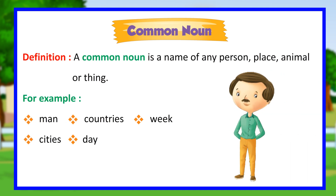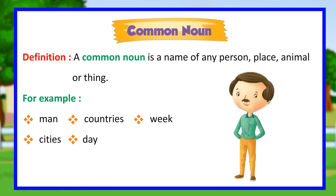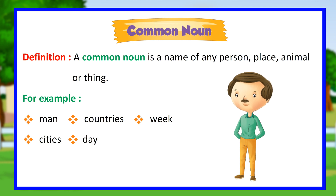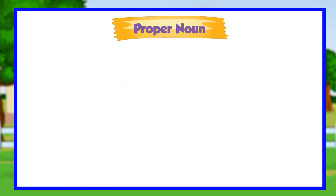Common noun. Definition: a common noun is a name of any person, place, animal or thing. For example: man, countries, week, cities, day.